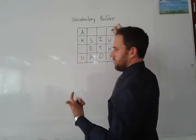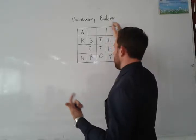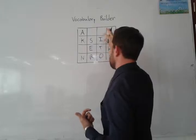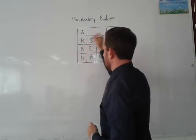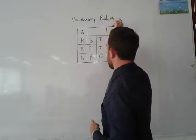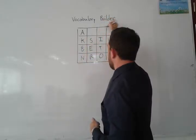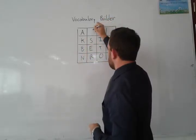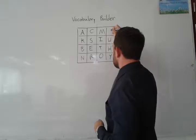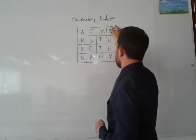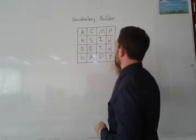We can use 16 letters to complete the grid. We'll say B, C, M — what else? One more — P, why not?